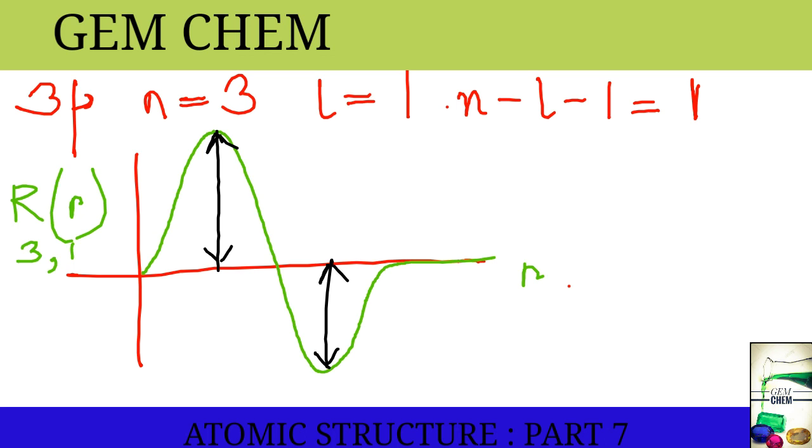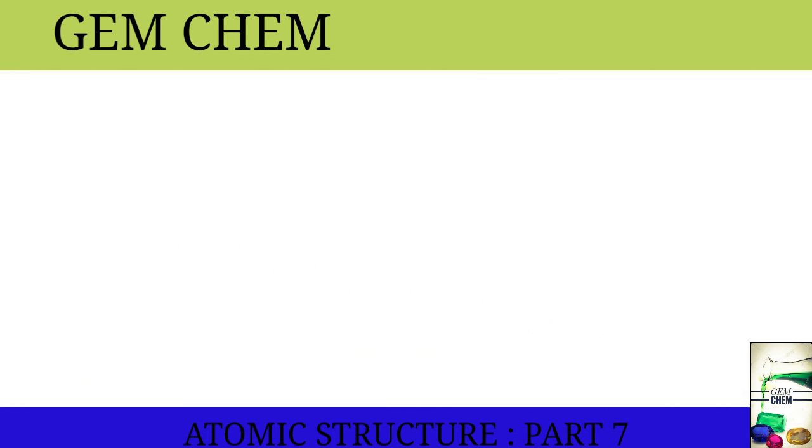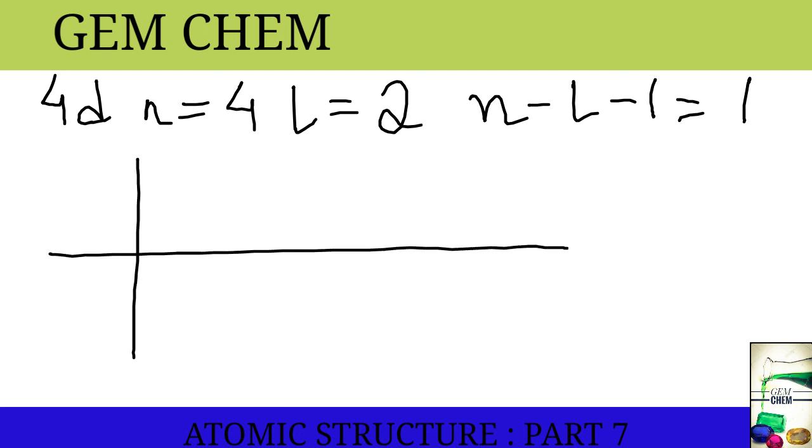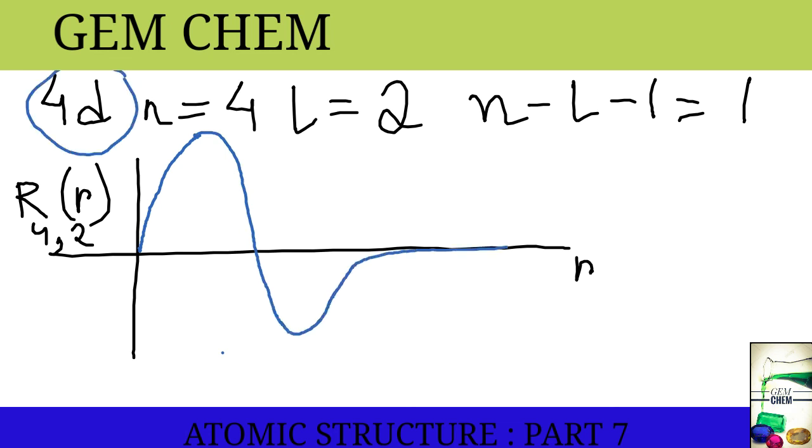Now we will see for 4d. For 4d, we have n equal to 4 and l equal to 2. So, number of nodes will be n minus l minus 1, so we get it as 1. 4 minus 2 minus 1. On drawing the graph, here the axis is R(4,2) and here r. We start from origin and one node means there will be one intersection and it will meet here gradually. This is our 4d curve.